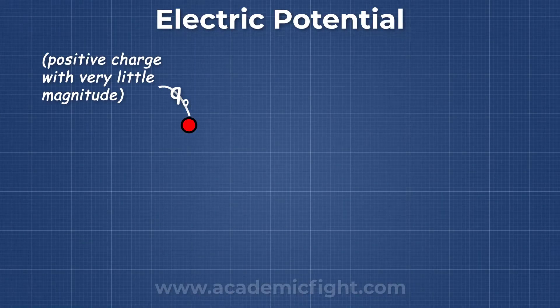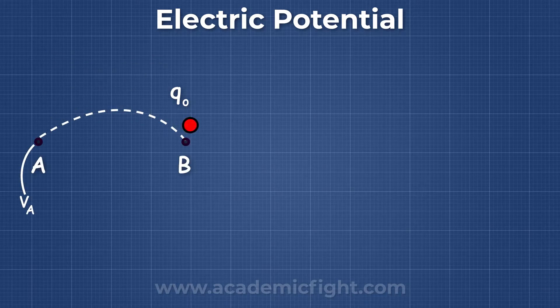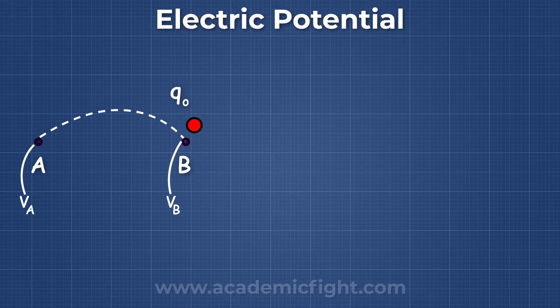Let's say we have a positive charge Q0, with very little in magnitude, and we are bringing that charge from point B to point A. Potential of point A is VA, and the potential of point B is VB. Now to bring this charge, let's say we need to do the work,